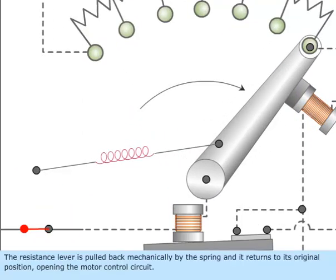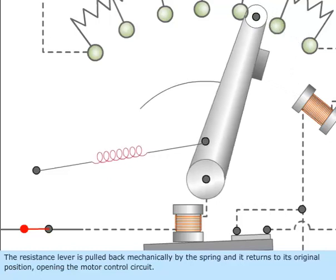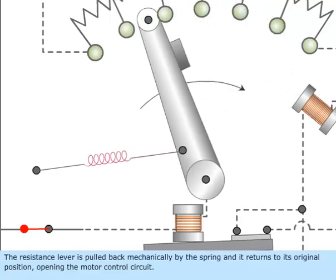The resistance lever is pulled back mechanically by the spring and it returns to its original position opening the motor control circuit.